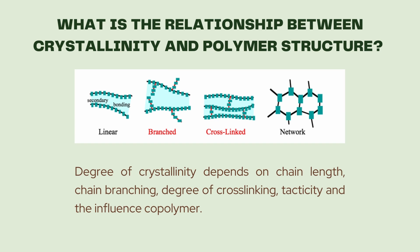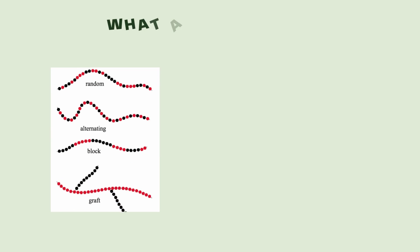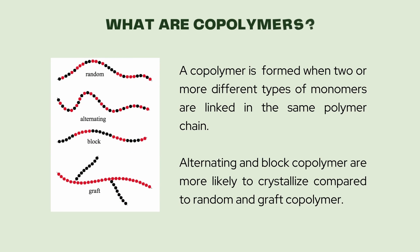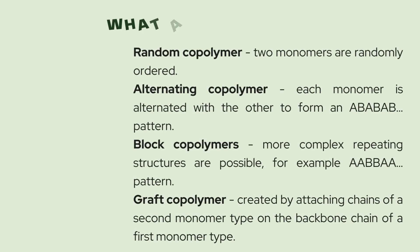Crystallinity also increases with increased intermolecular forces. A copolymer is formed when two or more different types of monomers are linked in the same polymer chain. Alternating and block copolymers with regular arrangement are prone to crystallize compared to random and graft copolymers.